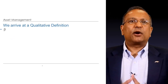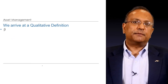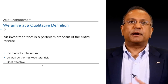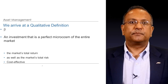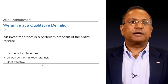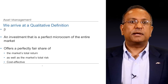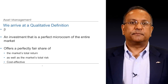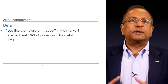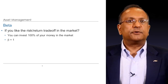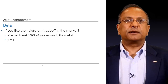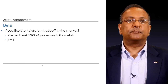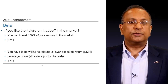With this as background, we arrive at a qualitative definition of beta. Beta is an investment that is a perfect microcosm of the entire market — it offers a perfectly fair share of the market's total return as well as total risk, and is extraordinarily cost effective. So what does beta really mean? If you like the risk-return trade-off in the market, you can invest 100% of your money in the market and your beta would then be one. But is that too risky for you?